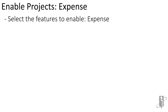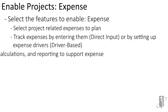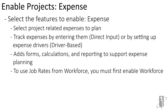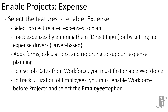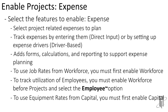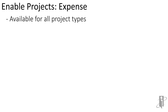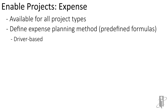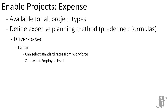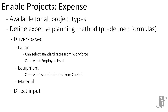Depending on what you turn on — direct input or driver-based — you will get different forms, different calculations, and different reporting to support expense planning. If you have other frameworks such as workforce, you have to turn on job rates in workforce to get them to feed across to projects. If you want to track employee utilization, you go into workforce, select the employee option for employee-level planning, and that will also feed back and forth with projects. You might also want to tie this into the capital module to use equipment rates — you have to first enable the capital module, and then that feeds over to projects. Within expense projects planning, there are pre-built calculations — for instance, if you put in a labor rate and number of people, it will calculate the total, pulling from workforce. Or if you're calculating equipment costs and rates, it could pull that from capital. Maybe you're looking at material costs or directly inputting data — all of that is done through the expense portion of the Projects Framework.